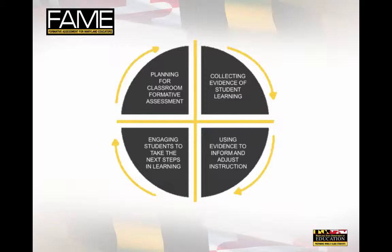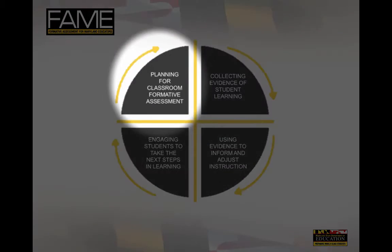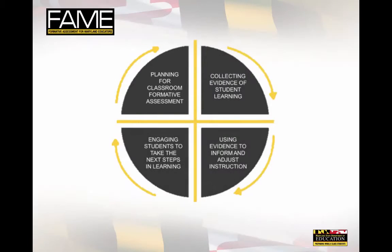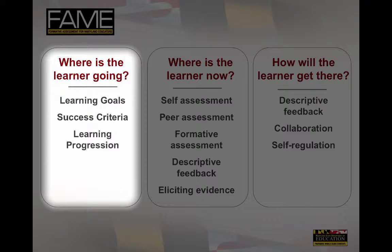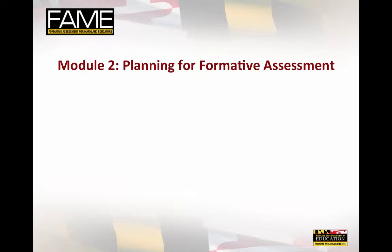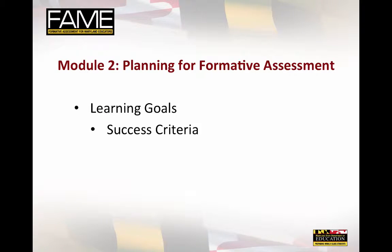In Module 2, teachers are focused on the first quadrant of the FAME model: Planning for Formative Assessment. The work in this module helps teachers answer the question, where is the learner going? This work sets the stage for all subsequent formative assessment practices. Teachers learn about three essential aspects to planning lessons with formative assessment: developing learning goals, establishing success criteria, and creating learning progressions.